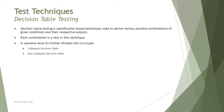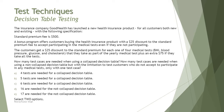To understand this, we will take an example to explore in more detail exactly how the collapsed decision table and non-collapsed decision table work. This is also a typical type of question in the examination which you should consider.